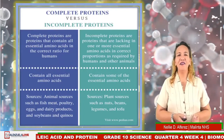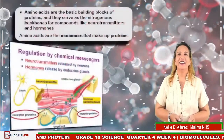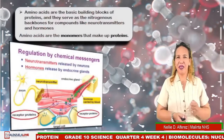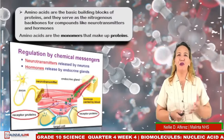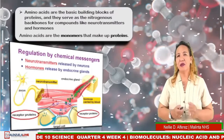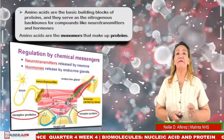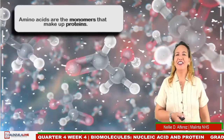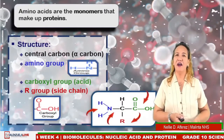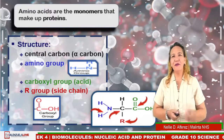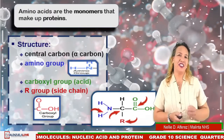Now let us talk about amino acids. Amino acids are the basic building blocks of protein. They serve as the nitrogenous backbone for compounds like neurotransmitters and hormones. Amino acids are the monomers that make up proteins. The structure of an amino acid includes the central carbon (alpha carbon), the amino group, the carboxyl group, and the R group, which is the side chain.